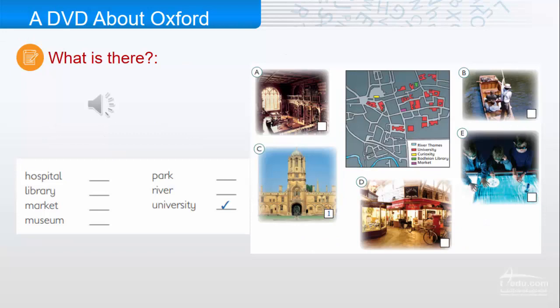What is there in Oxford? Listen and tick the things that you find. There is a very old, very famous university in Oxford. It is 900 years old and there are 20,000 students. The Bodleian Library has 11 million books. It's 400 years old. There's a science museum called Curiosity. It's very popular with children. People like going boating on the River Thames. There is a famous market in the city centre.